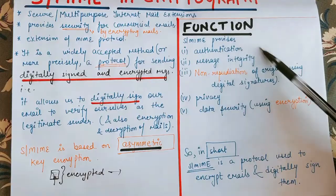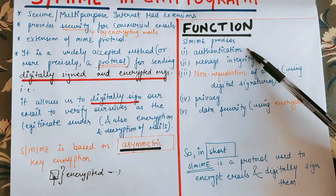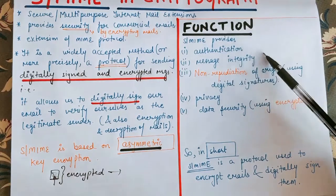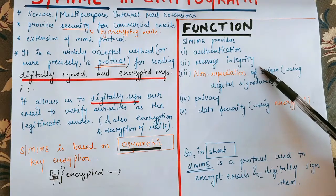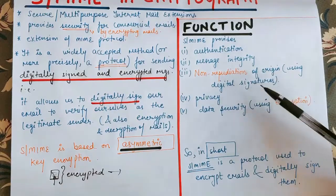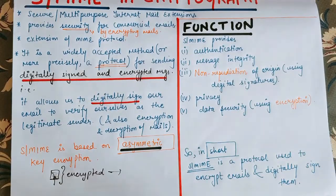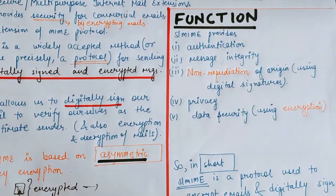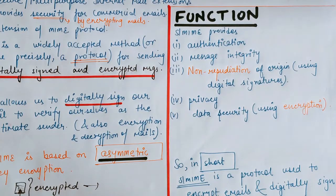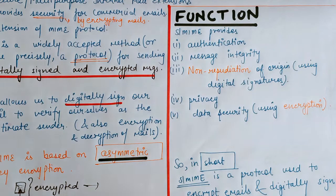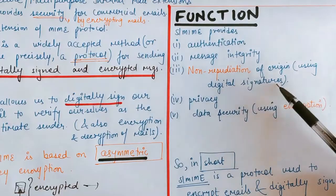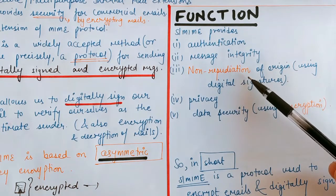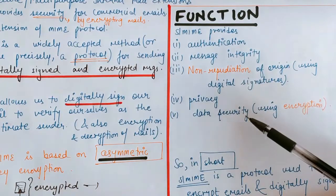SMIME protocol provides these functions: Authentication — if I am sending a message, you will know that I am the legitimate sender, achieved using the digital signature concept. Message integrity — our message is not being tampered with along the way. Non-repudiation of origin — no one can deny a particular fact. For example, if I sent you an email, I cannot later deny it because it contains my digital signature. We also get privacy and data security because we are using encryption.